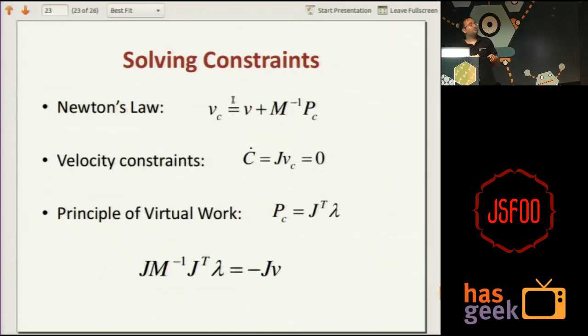So, how do we solve for constraints actually? So, first of all we got the initial velocity, then we need to find out Pc which is the corrective impulse, which will give the corrected velocity which is Vc. We know that C dot has to be 0 and we know that impulse is perpendicular to velocity, so it is Jt lambda. So, the solution of this is basically a simple linear equation which is of the format Ax equal to b, right? You can use any iterative linear solver, most popular is Gauss-Seidel solver and once you get lambda, you get the Pc which is the corrective impulse and then you get, you use the Pc to get the corrected velocities.